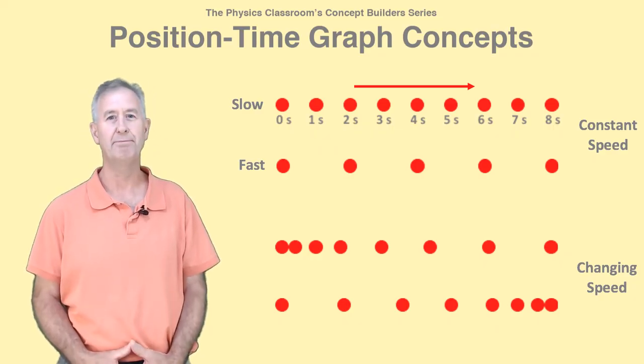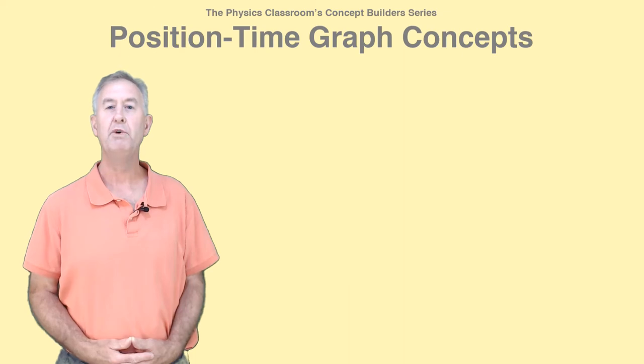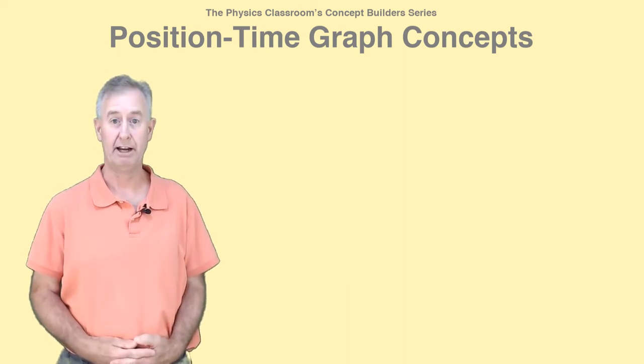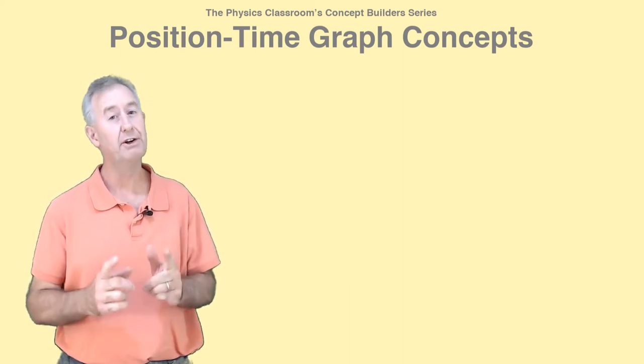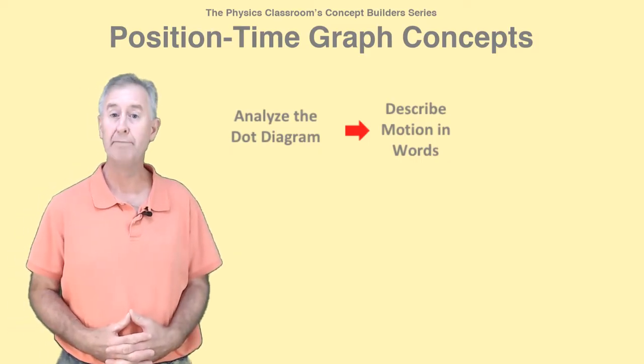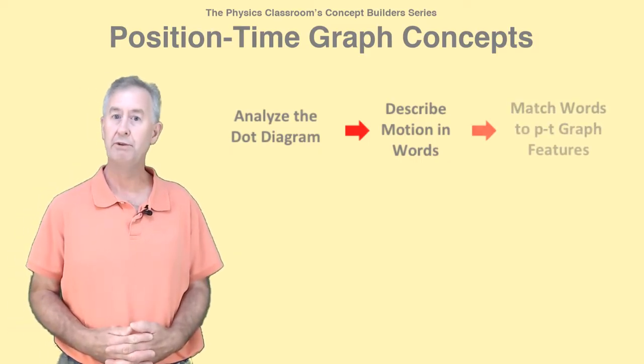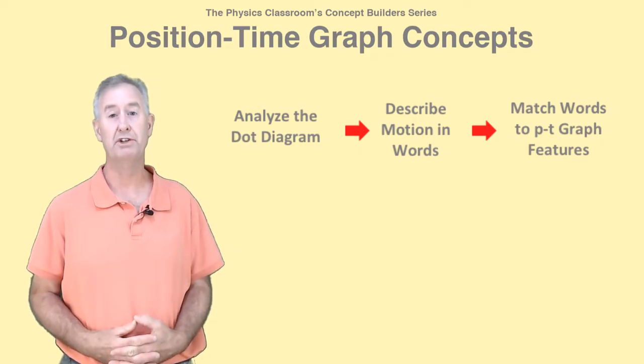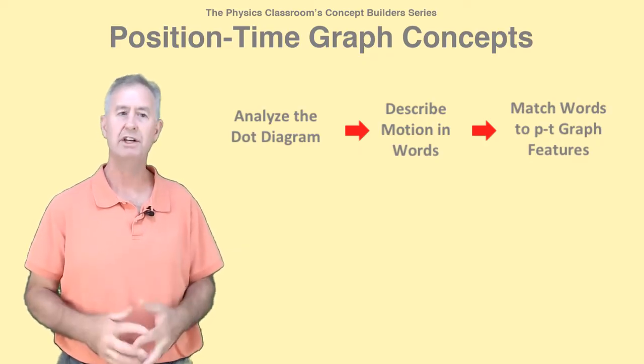If you ever have to relate a dot diagram to a PT graph, here's a great strategy. Analyze the dot diagram and describe the motion in words. Then relate the words to the features of the PT graph. Here's an example.